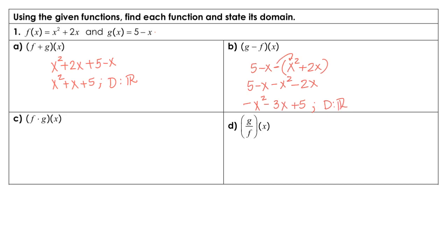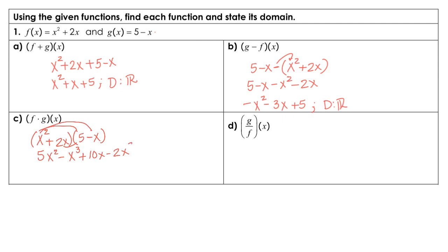Part c, we are multiplying our functions, so we would multiply x squared plus 2x, and we're going to multiply that by 5 minus x. This is where we're going to need to do our FOIL. So we're going to have 5x squared minus x cubed, and then on the inside plus 10x, and then minus 2x squared. Combining like terms, we will have negative x cubed, positive 3x squared, and then positive 10x. This is a polynomial, so the domain is all real numbers.